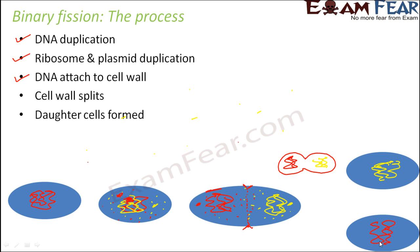So starting with one cell, you now have two cells that are exactly identical to the parent cell. The different colors used are just to show that the same DNA gets duplicated — one copy is taken by each daughter cell. This process is straightforward: DNA, ribosome, and plasmid all get duplicated, the cell splits, and each daughter cell receives one copy of each.